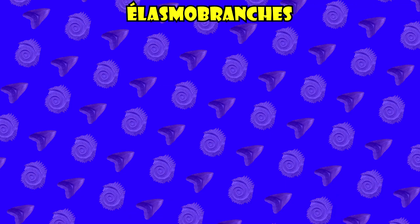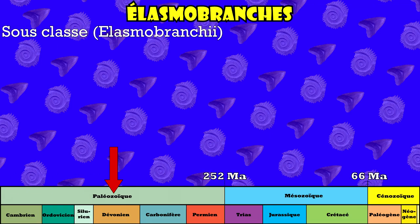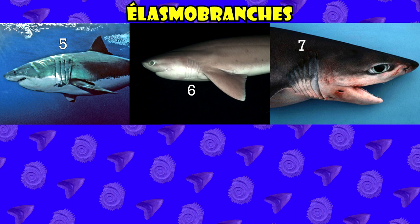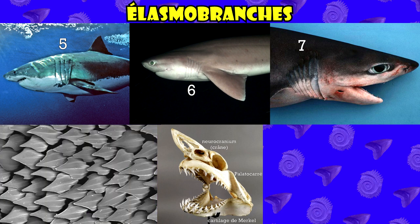Abordons à présent le groupe des hélasmobranches. Cette sous-classe est présente dans nos océans depuis le Dévonien et évolue encore dans nos océans actuels. Plusieurs choses les caractérisent, comme la présence de 5 à 7 fentes branchiales associées à des poches branchiales indépendantes et ouvertes vers l'extérieur, le palatoquadrate qui n'est pas fusionné au crâne, la présence de denticules dermiques, et j'en passe.